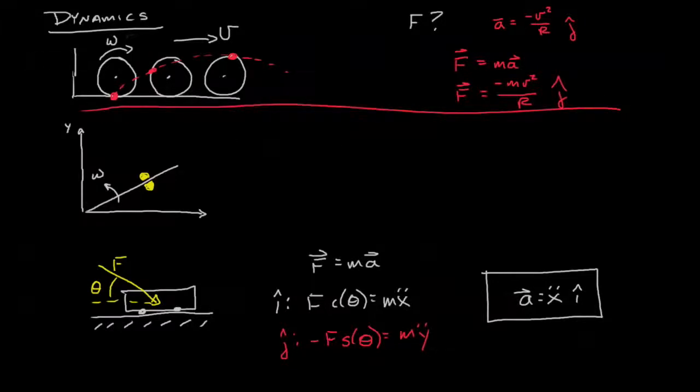Let's try something a little less trivial. We'll remember our slider on a rod, and the acceleration in this case was 2v omega e_theta, remembering that v is the velocity in this direction, or the tangential velocity.